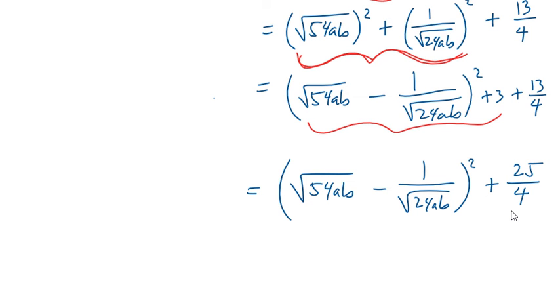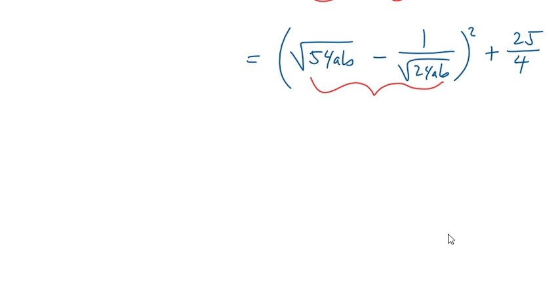Now, let's find out if it's possible for this difference to attain a value of 0. Let's equate this difference to 0 and determine the value of ab for which this difference equals 0. So, we have √(54ab) - 1/√(24ab) = 0.